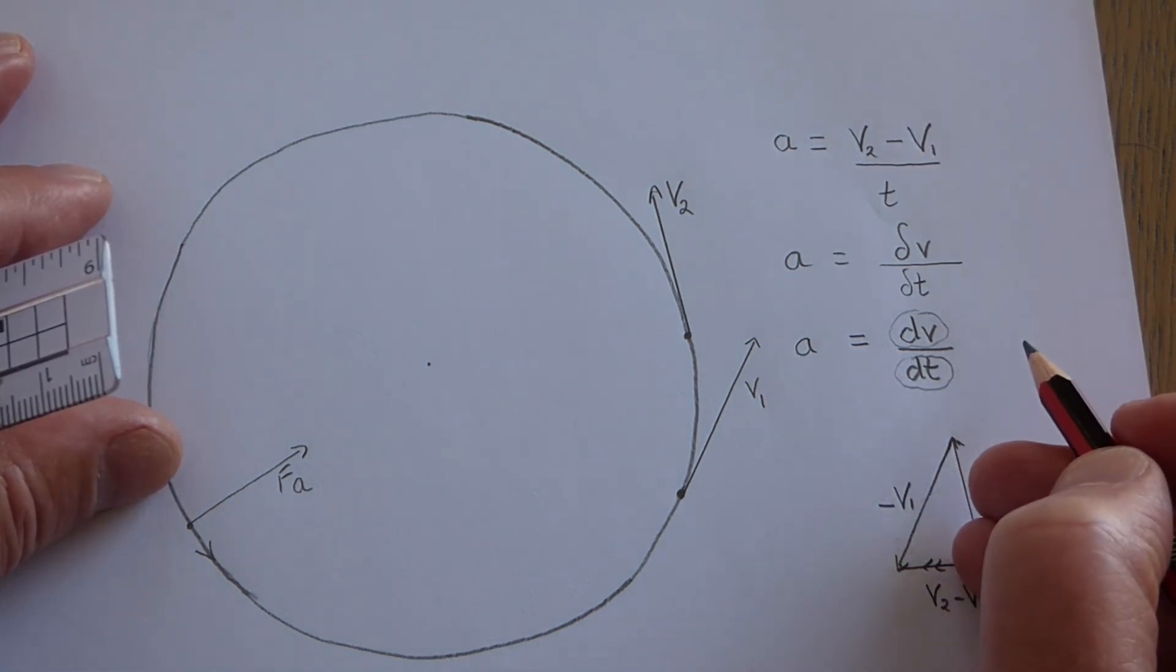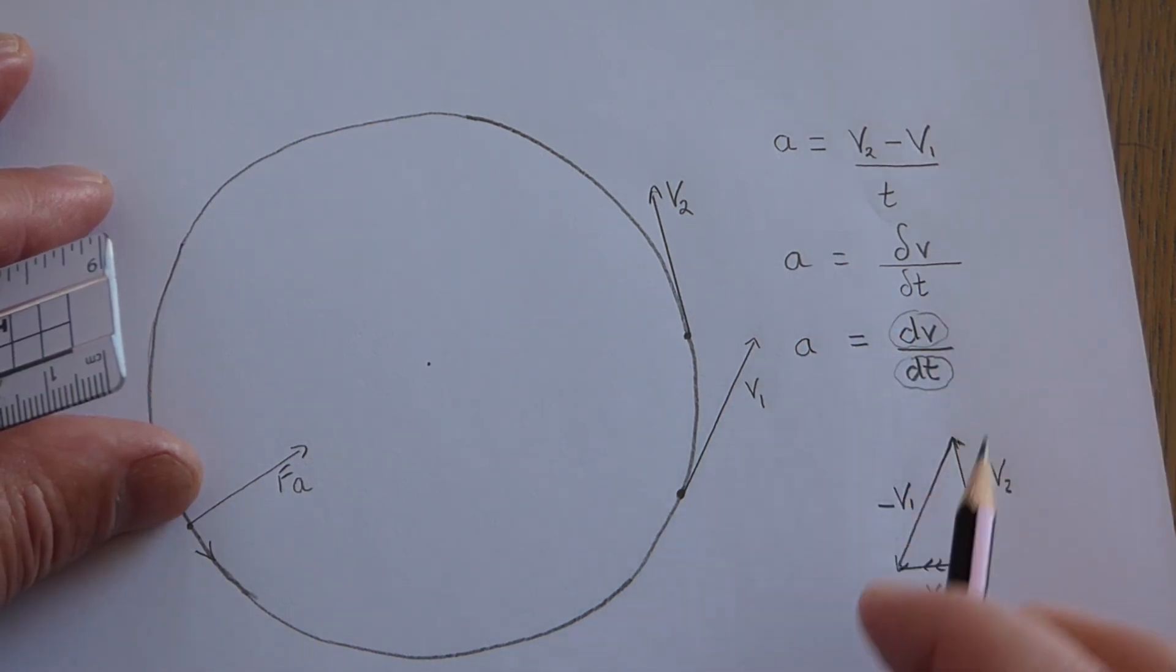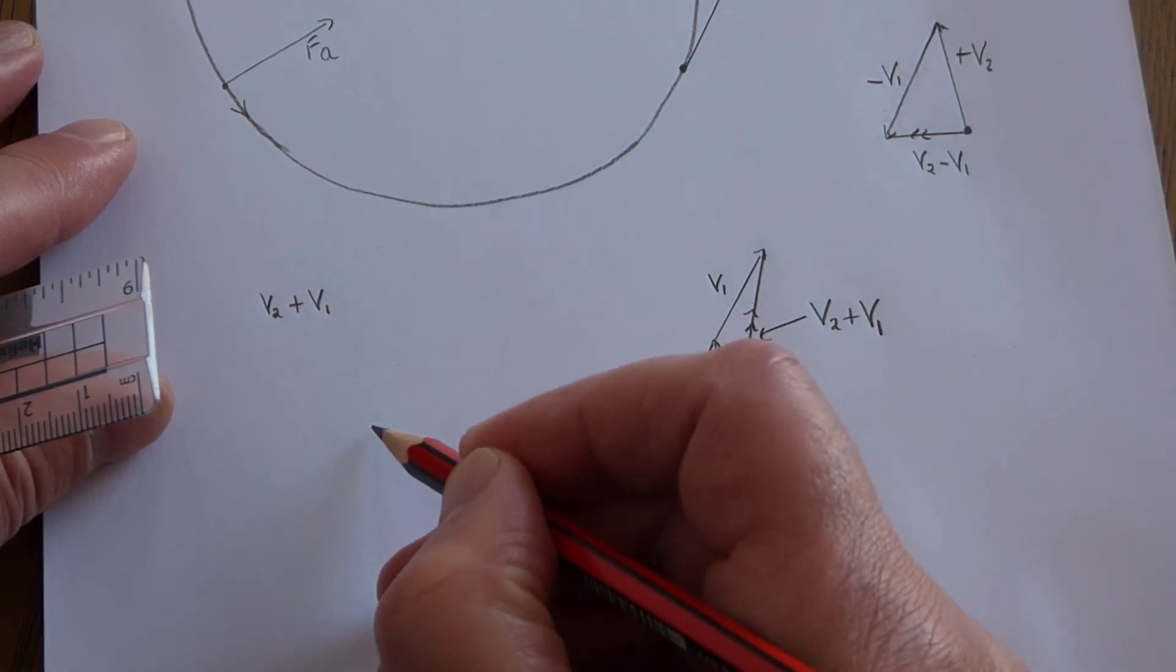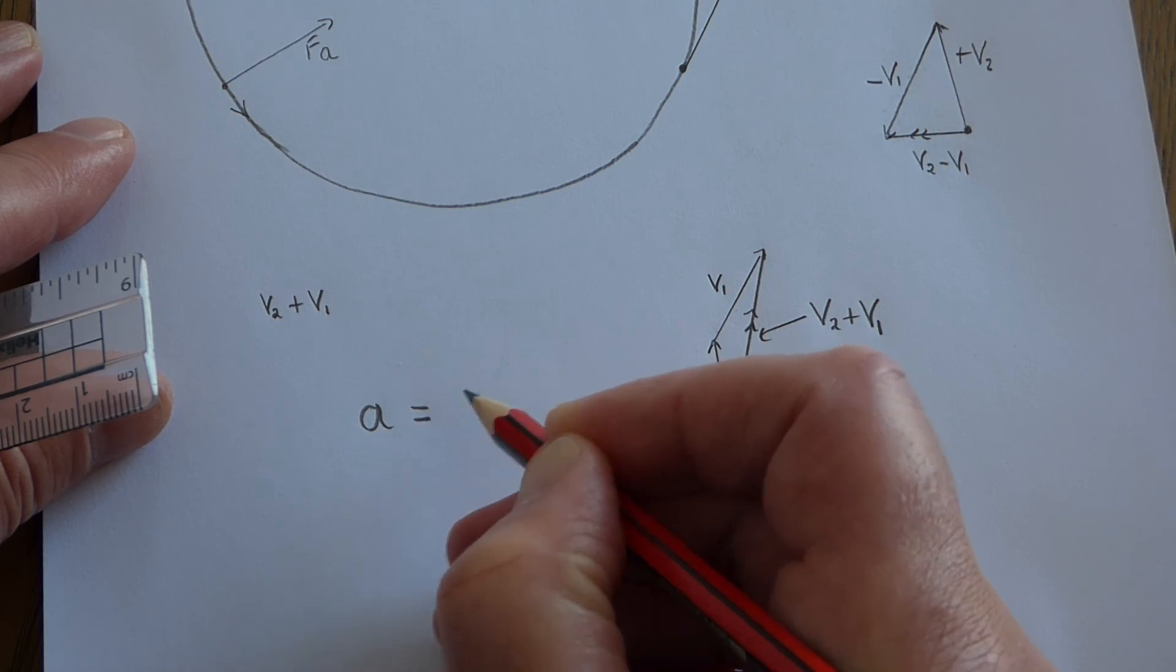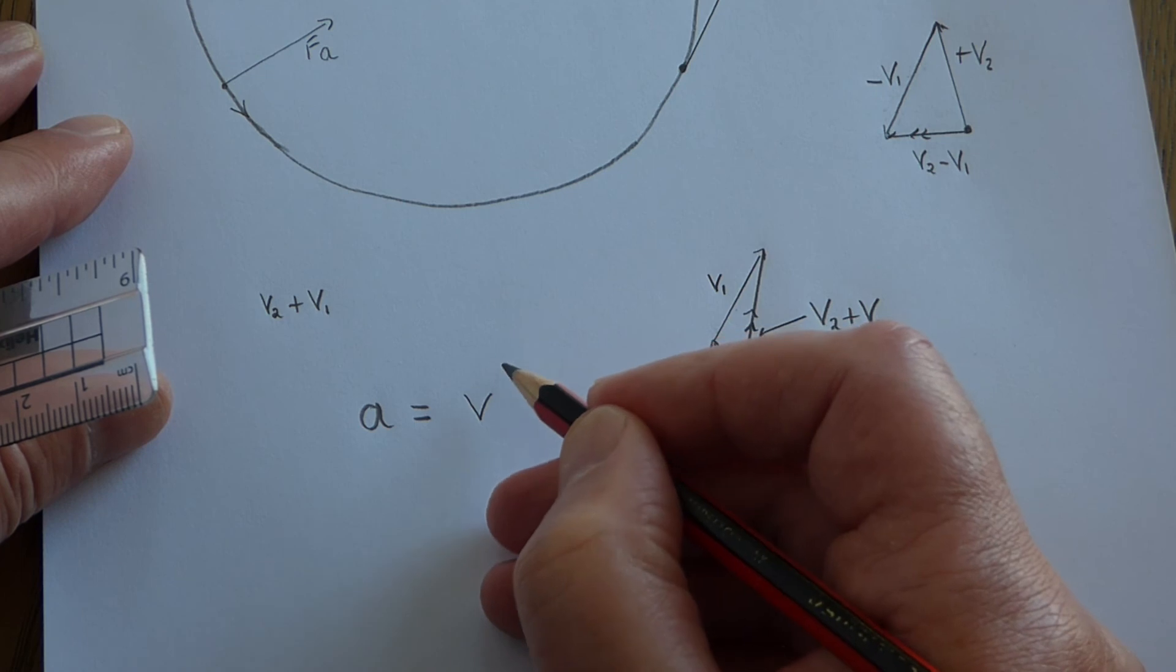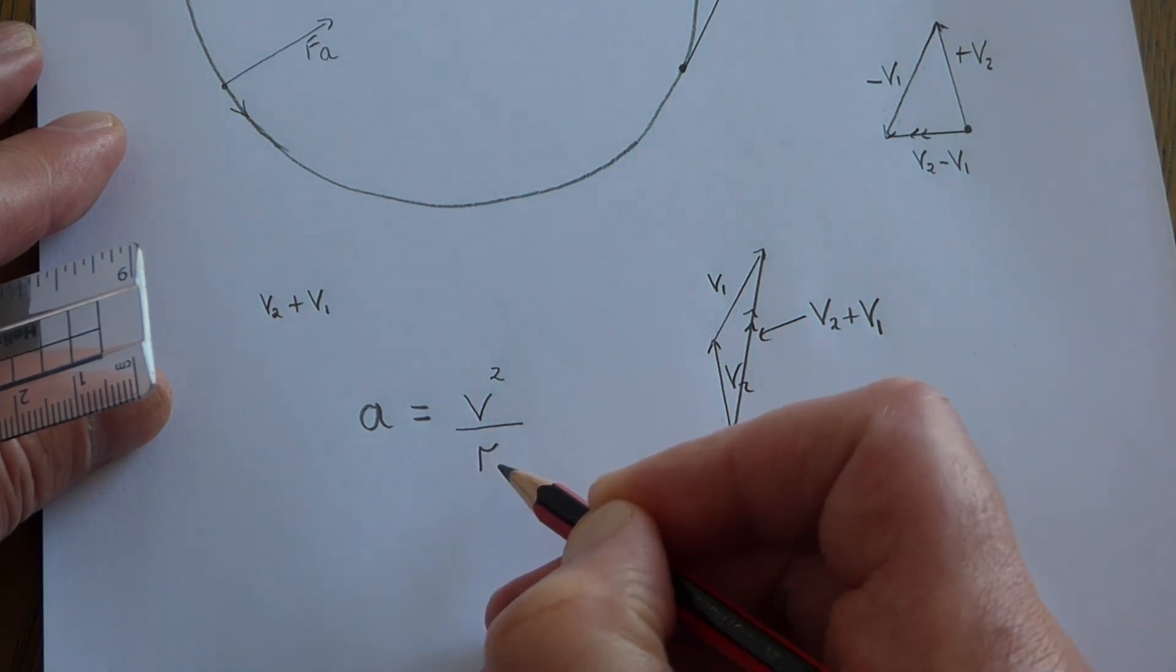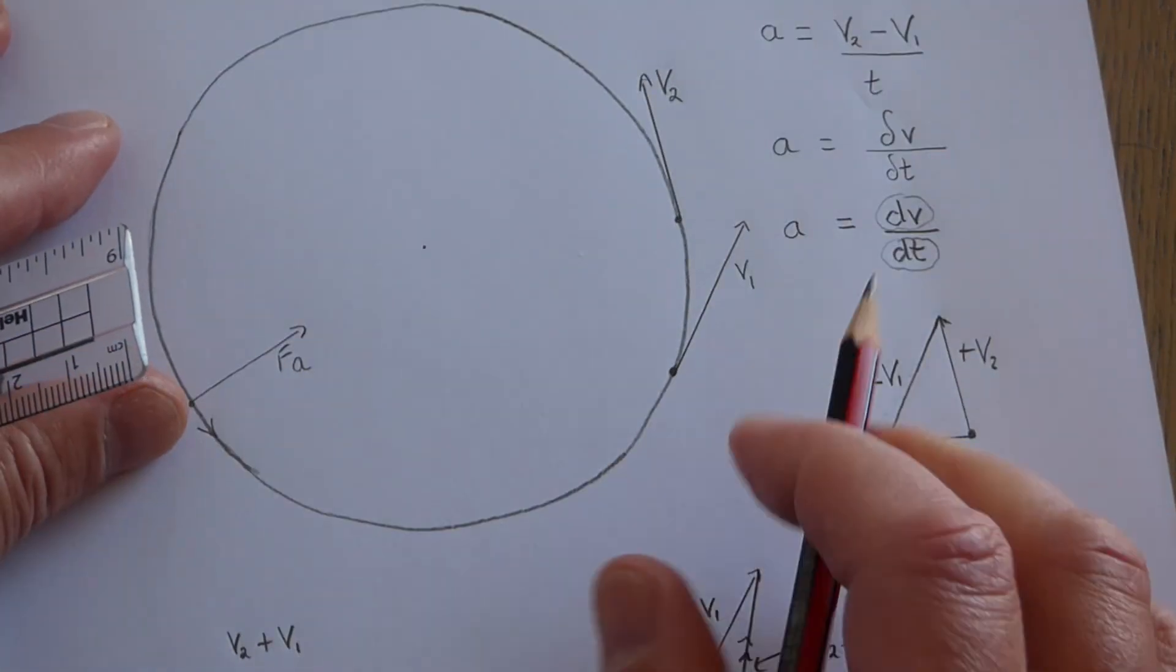When mathematicians do this with vector diagrams, they end up with a very neat formula for the acceleration. It turns out that the acceleration is how fast it's going—its speed, no direction needed—squared, then divided by the radius of the circle: v² divided by r.